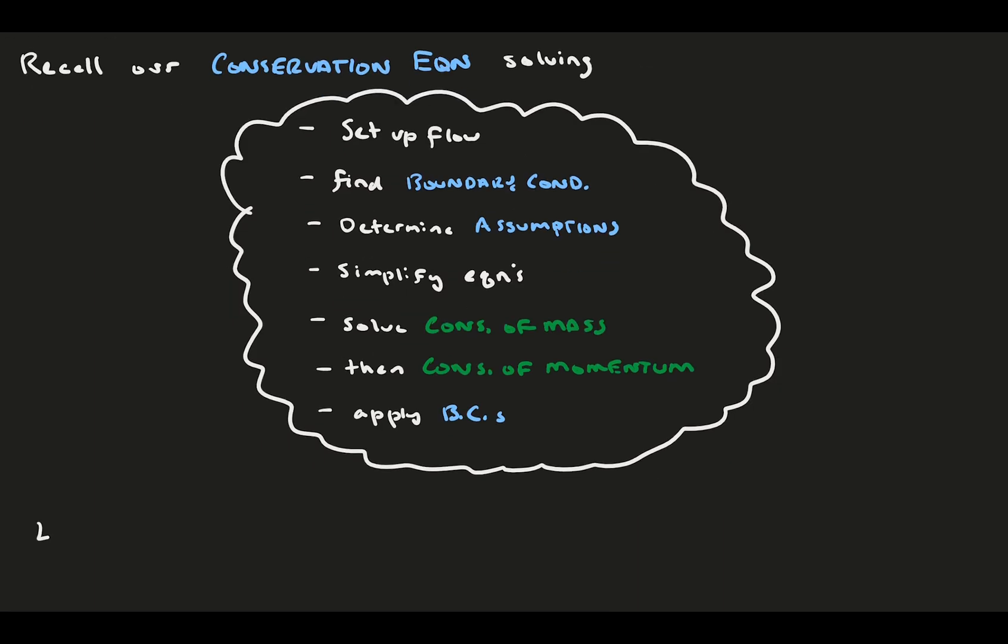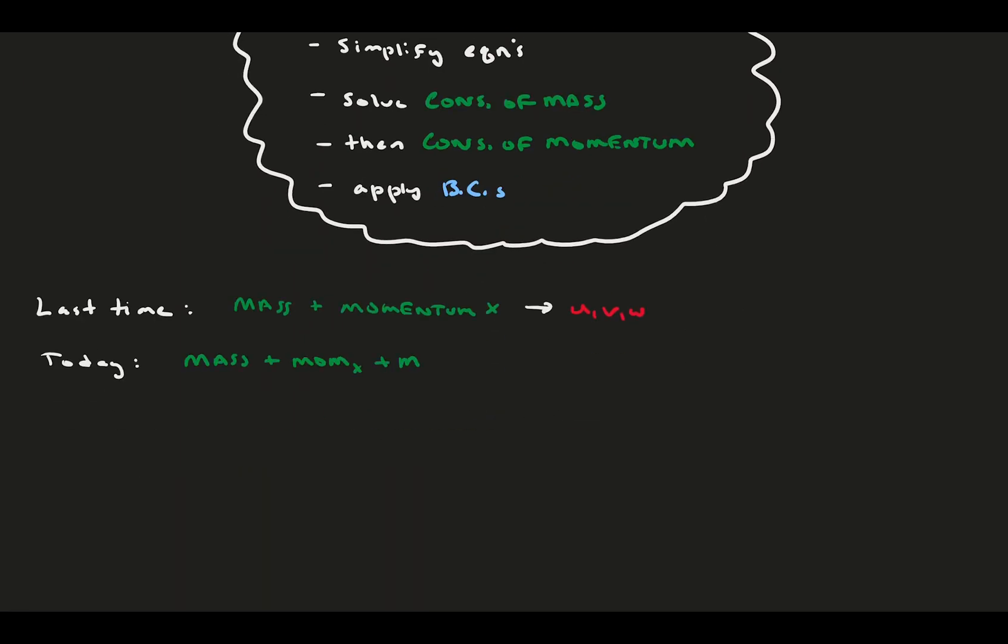Last time, for channel flow, we only used conservation of mass and momentum in the x-direction to get the velocity field. Today, we'll do the same, but then explore the conservation of momentum in the other two directions to learn more about the pressure field itself.